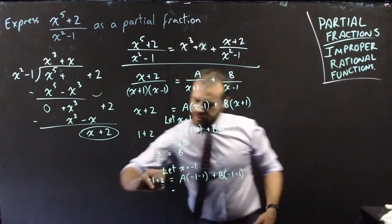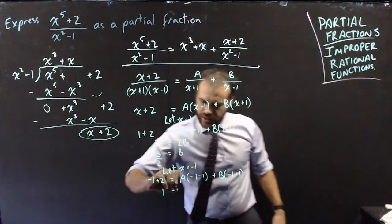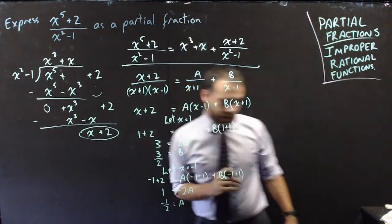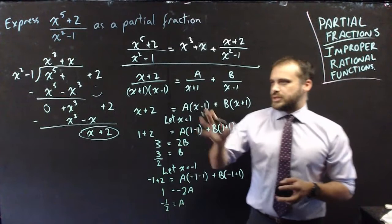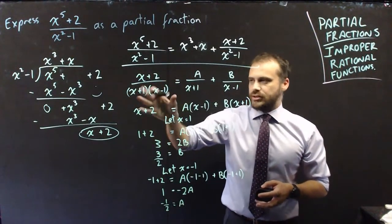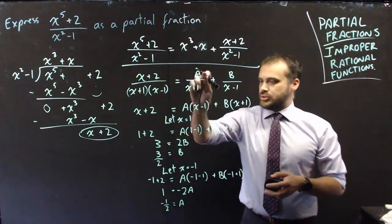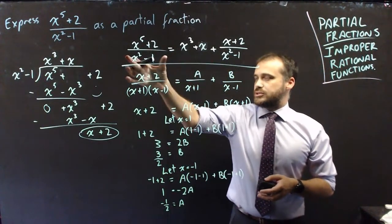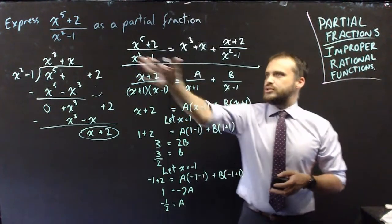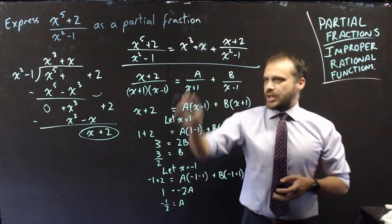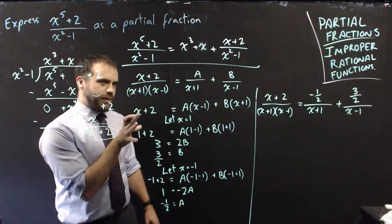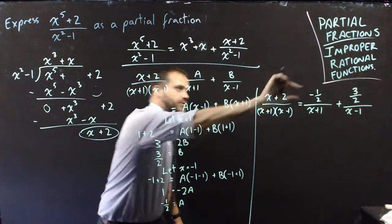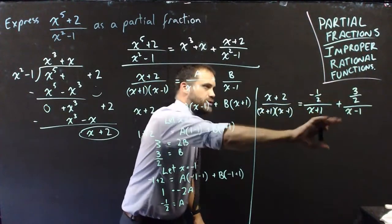We can do the next one by letting x equal negative 1, which eliminates B. We get negative 1 plus 2, that's 1, and this is negative 2A, with B equal to 0. So A is equal to negative 1 half. We're now pretty much finished, because we can say this rational function equals negative 1 half as our A value, and 3 over 2 as our B value — plus the x cubed plus 3 to make up the whole expression.